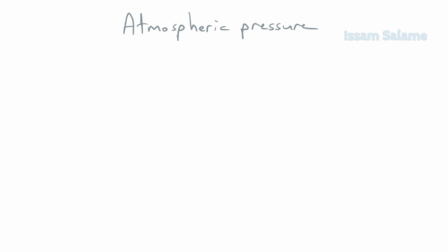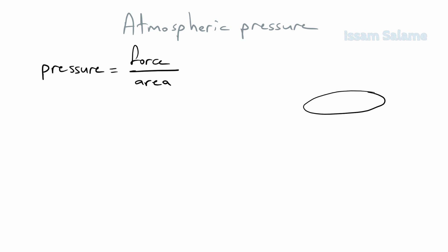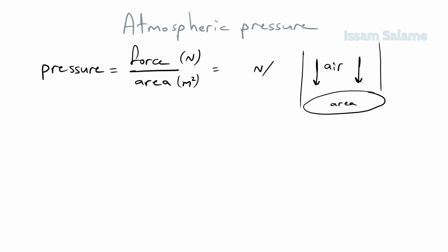Atmospheric pressure is the pressure exerted by air. The formula for pressure is force divided by area. To calculate atmospheric pressure, we find the weight of a column of air divided by the area below that column. The SI unit of force is the newton and area is meter squared, so pressure is measured in newtons per meter squared, also called the Pascal, abbreviated Pa.